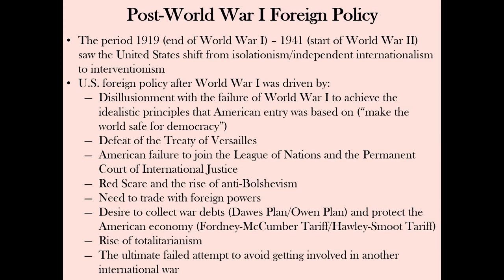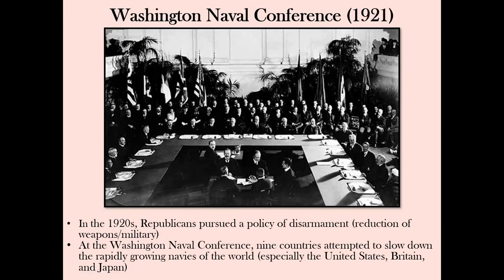Before we get to Hitler, Tojo, and Mussolini, I want to consider two events from the 1920s in more detail. Harding's Secretary of State was Charles Evans Hughes, whom I spoke about as the Chief Justice of the Supreme Court during the early Roosevelt administration. Hughes worked with Congress to pass legislation officially ending the war with Germany in 1921 — yes, two years after the war actually ended. He then hosted the Washington Naval Conference in 1921, a meeting of all major naval powers except Bolshevik Russia, which would become the Soviet Union the following year.